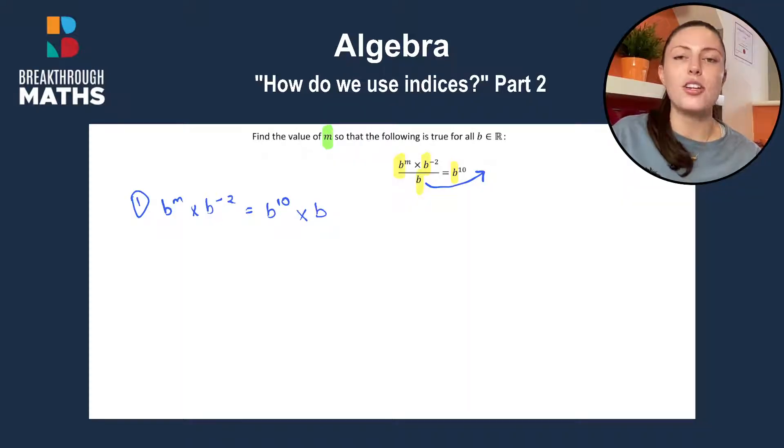Now we get into our question and we see what rules we have to use. So we see that we have multiplying on both sides and we learned from part 1 that multiplying means that you have to add the powers. So we'll add our powers on the left hand side first. So M plus minus 2 and on the right we'll have B to the power of 10 plus 1.